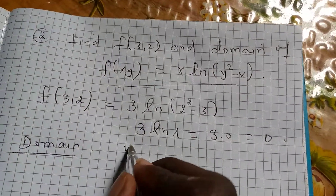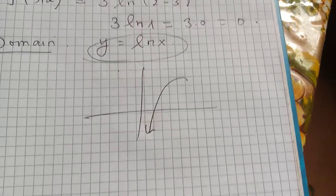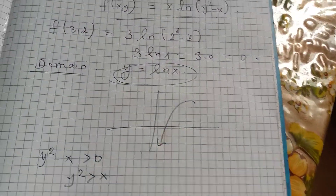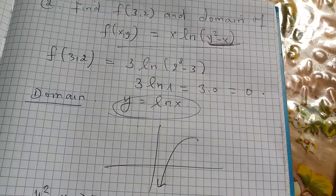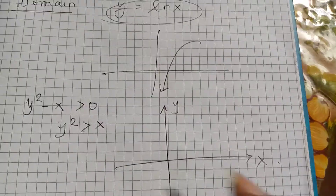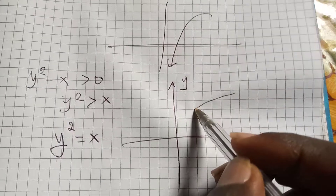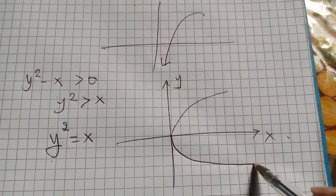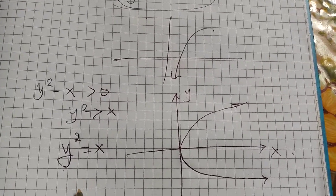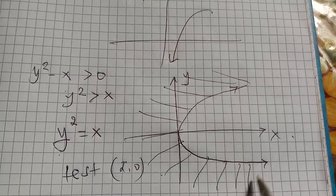For the domain, we know that for y = ln(x), the curve has a particular shape. We need y² - x to be greater than zero, which means y² is greater than x. The solution curve looks like a parabola passing through the center and bending outward. Using the test point (2, 0), we find the solution is on the outer part of the curve, not inside.